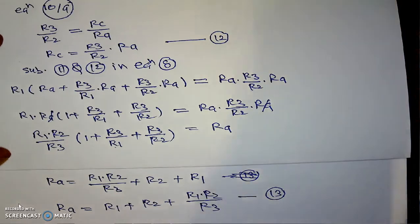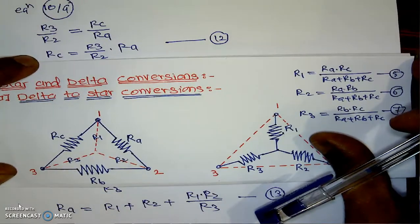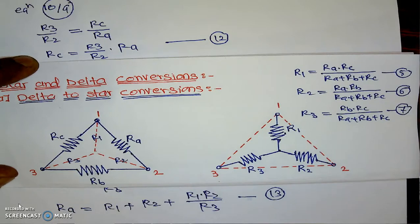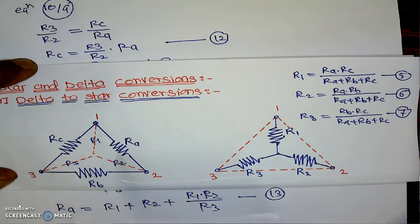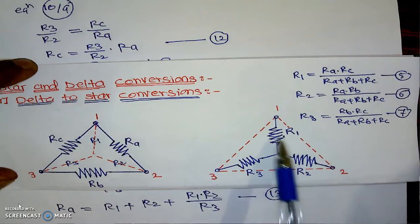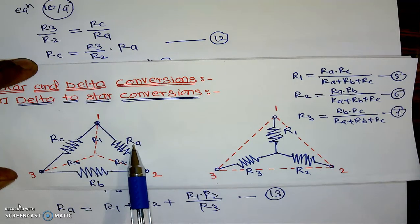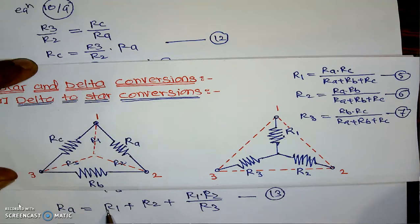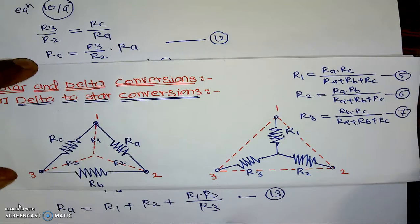Now, let us look at how equation number 13 works. Ra is the resistance connected between R1 and R2 in the delta network. Its value is R1 plus R2 plus the product R1 into R2 divided by the remaining resistance R3. This is the formula for Ra.